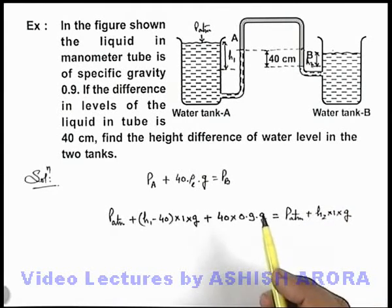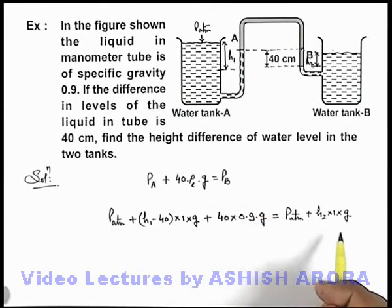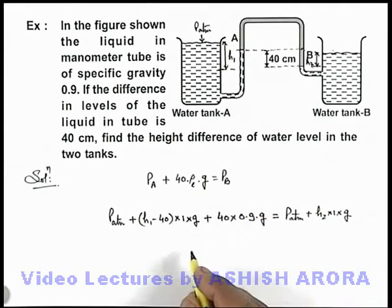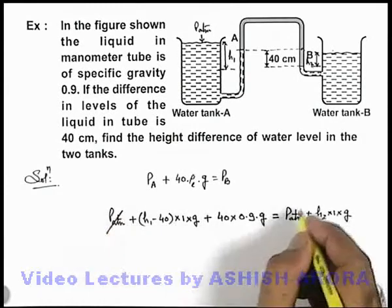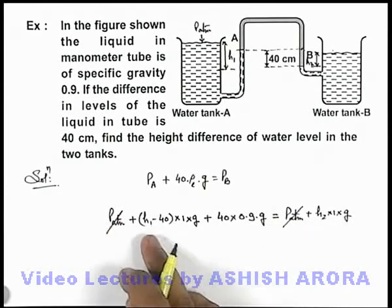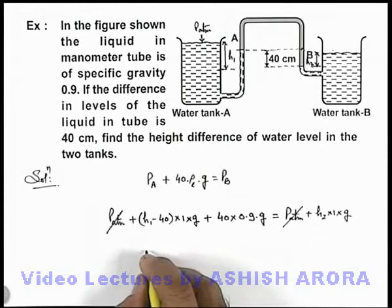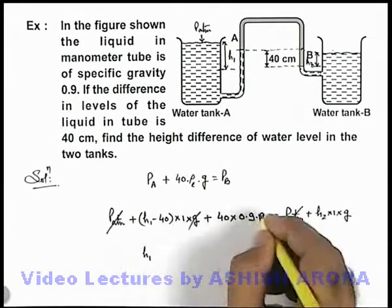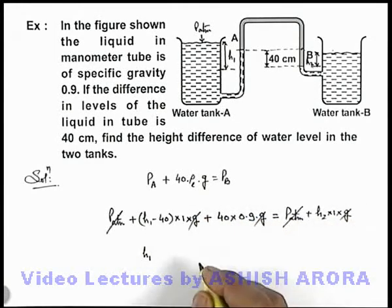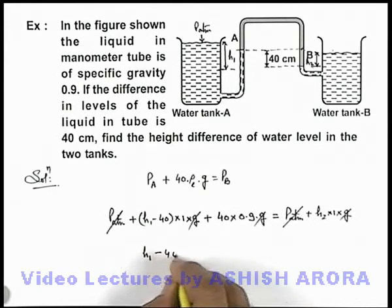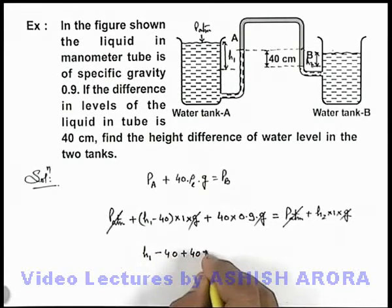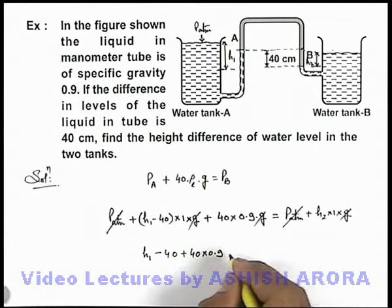If we just relate the two parameters here, we can directly write in this situation P atmospheric will get cancelled out. In this expression we can see h1 g also gets cancelled out. h1 minus 40 plus 40 multiplied by 0.9 is equal to h2.